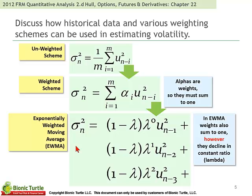So let's look at chapter 22, where we discuss how historical data and various weighting schemes can be used in estimating volatility. We're going to see that the key idea here is different weighting schemes. We start with the most basic, which is unweighted. We could also call this equally weighted. Jorion in his textbook calls this a moving average, which is fine as well. Moving average is implicitly equally weighted.